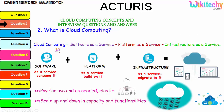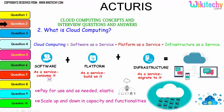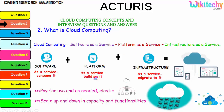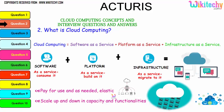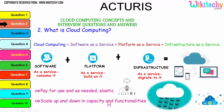Cloud computing consists of Software as a Service, Platform as a Service, and Infrastructure as a Service. The collaboration of software, platform, and infrastructure is referred to as cloud computing. The major advantage is pay-for-use as needed and elasticity — if you need minimal storage, pay for that; if you need bigger storage, pay for that. You can scale up and down in capacity and functionality, which is the major advantage of cloud computing.